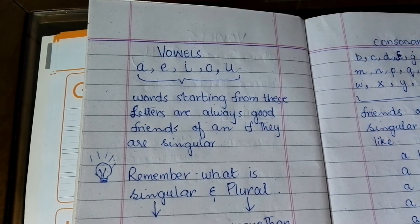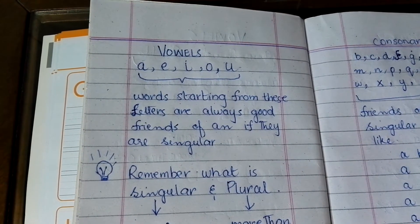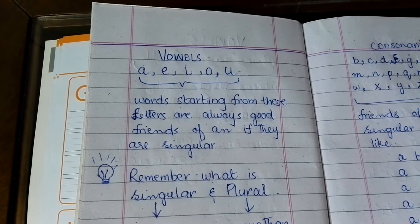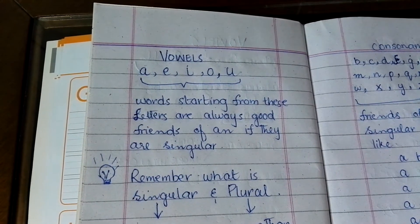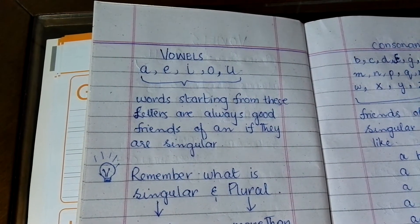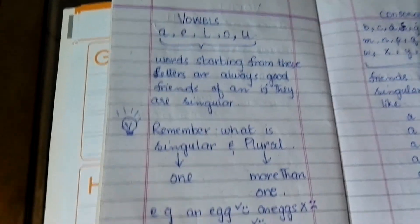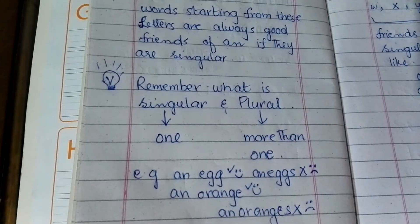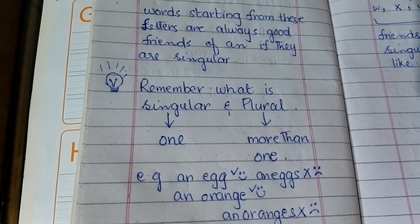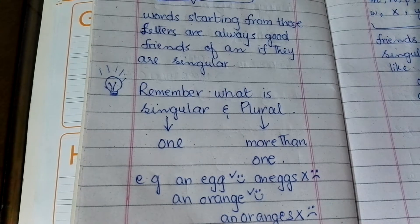Jo words in vowel letters se start hotte hai, agar wo singular hoon, to wo hamesha 'an' ke friend hote hain. Aapko pata hai na singular aur plural kya hota hai? Singular means one, aur plural means more than one.